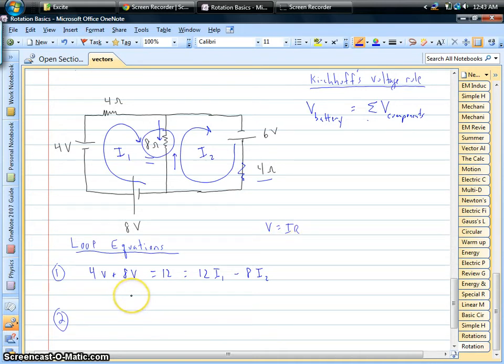Let's do the same thing, a similar thing, on the right loop. We really have one battery, so that's going to be 6 volts. I₂ is going through both the 4-ohm and the 8-ohm resistors. So we have 12 ohms times whatever I₂ is. But now, the shared one is the 8.